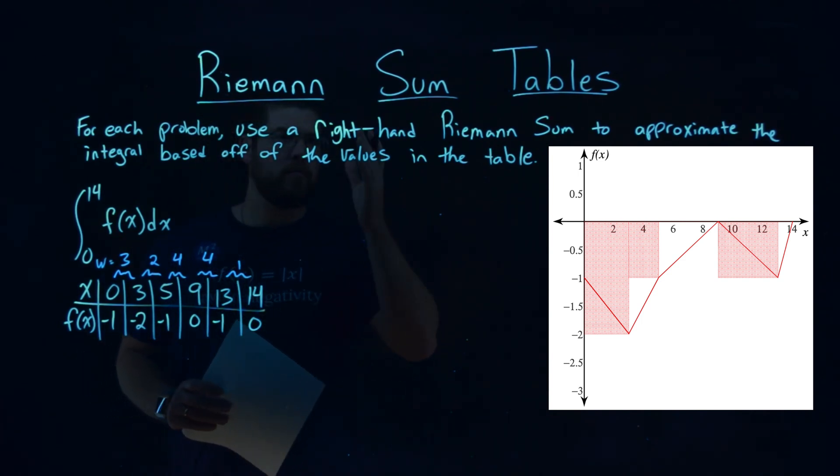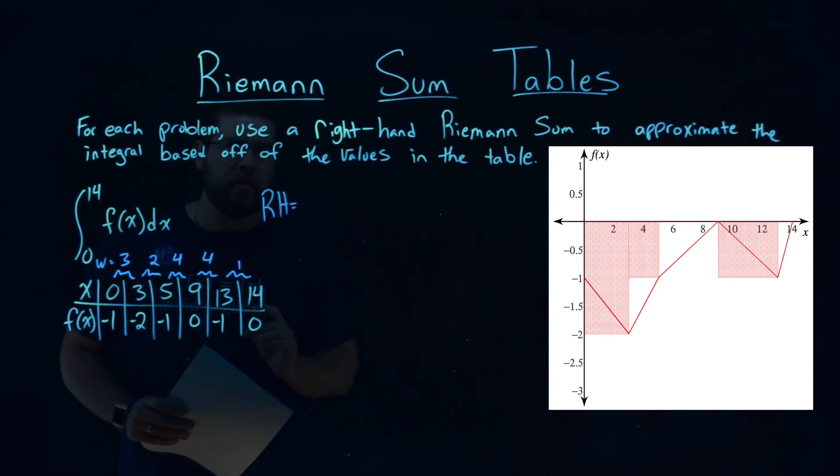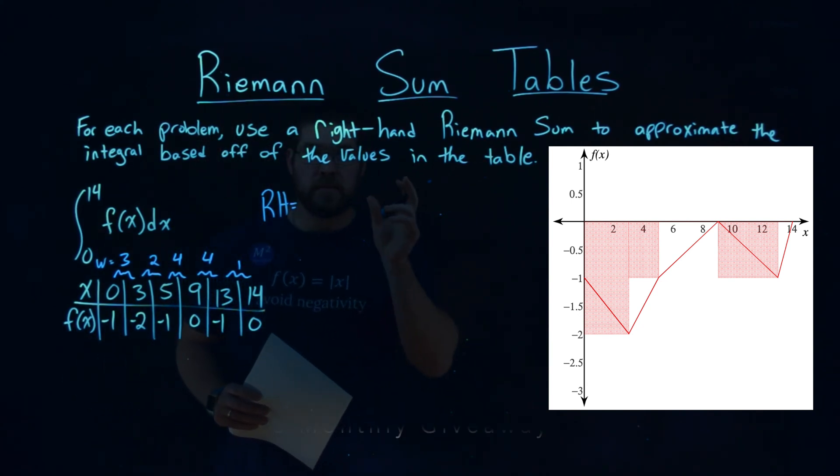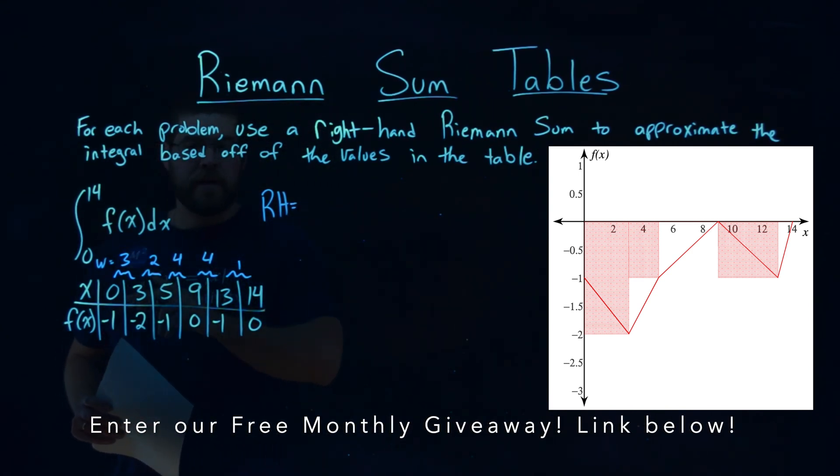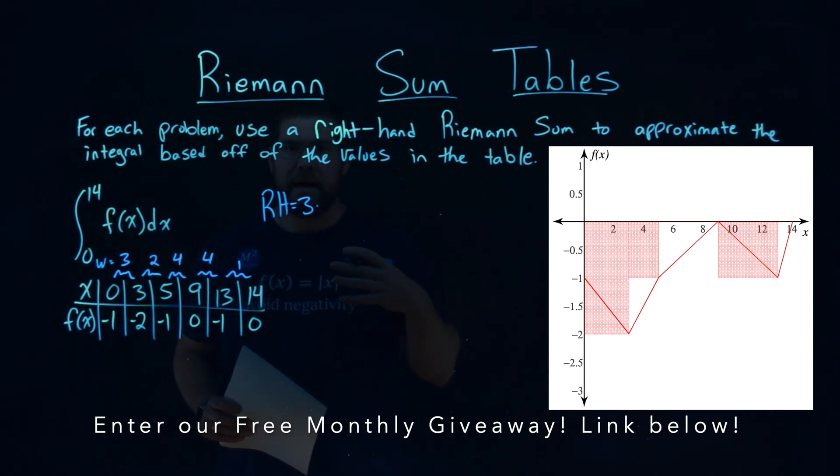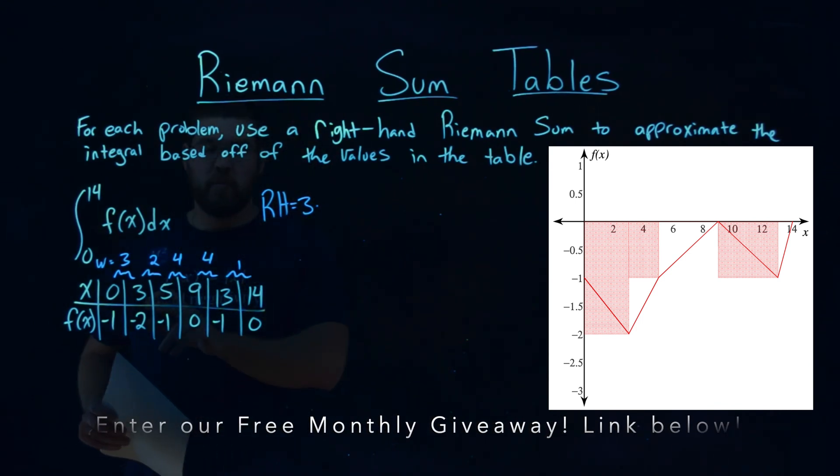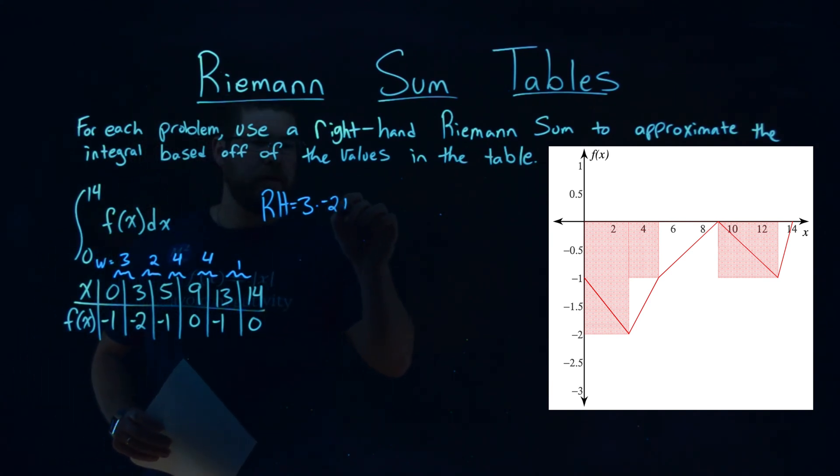Okay, now they tell us it's a right-hand Riemann sum. Right-hand. So the area of each rectangle is its width times its height. Our first width of the rectangle we found to be 3. We need to multiply that by the height of that rectangle. And since it's a right Riemann sum, we use the y value or f of x value on the right side of that rectangle, and that y value being negative 2. So negative 2 right here.